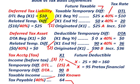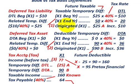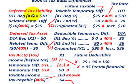Let's start with the deferred tax liability. This is a taxable temporary difference, and what you have to do is make your comparison — what your change is during the year — to determine what was originated during the year. The deferred tax liability results in a future taxable amount.